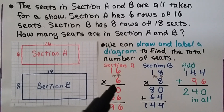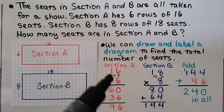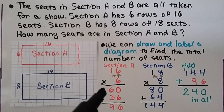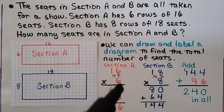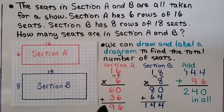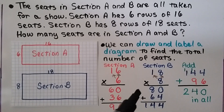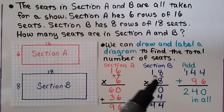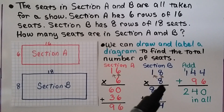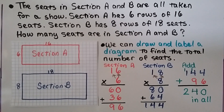We can use partial products to multiply. We start with the six and multiply it to the tens place — there's one ten, so six times ten is sixty. Now we multiply the six to the ones place: six times six is equal to thirty-six. Sixty plus thirty-six is equal to ninety-six, so section A has ninety-six seats. Now we use partial products to multiply eighteen times eight. Eight times the one ten is eighty, and eight times eight is sixty-four. We add them and get one hundred forty-four.